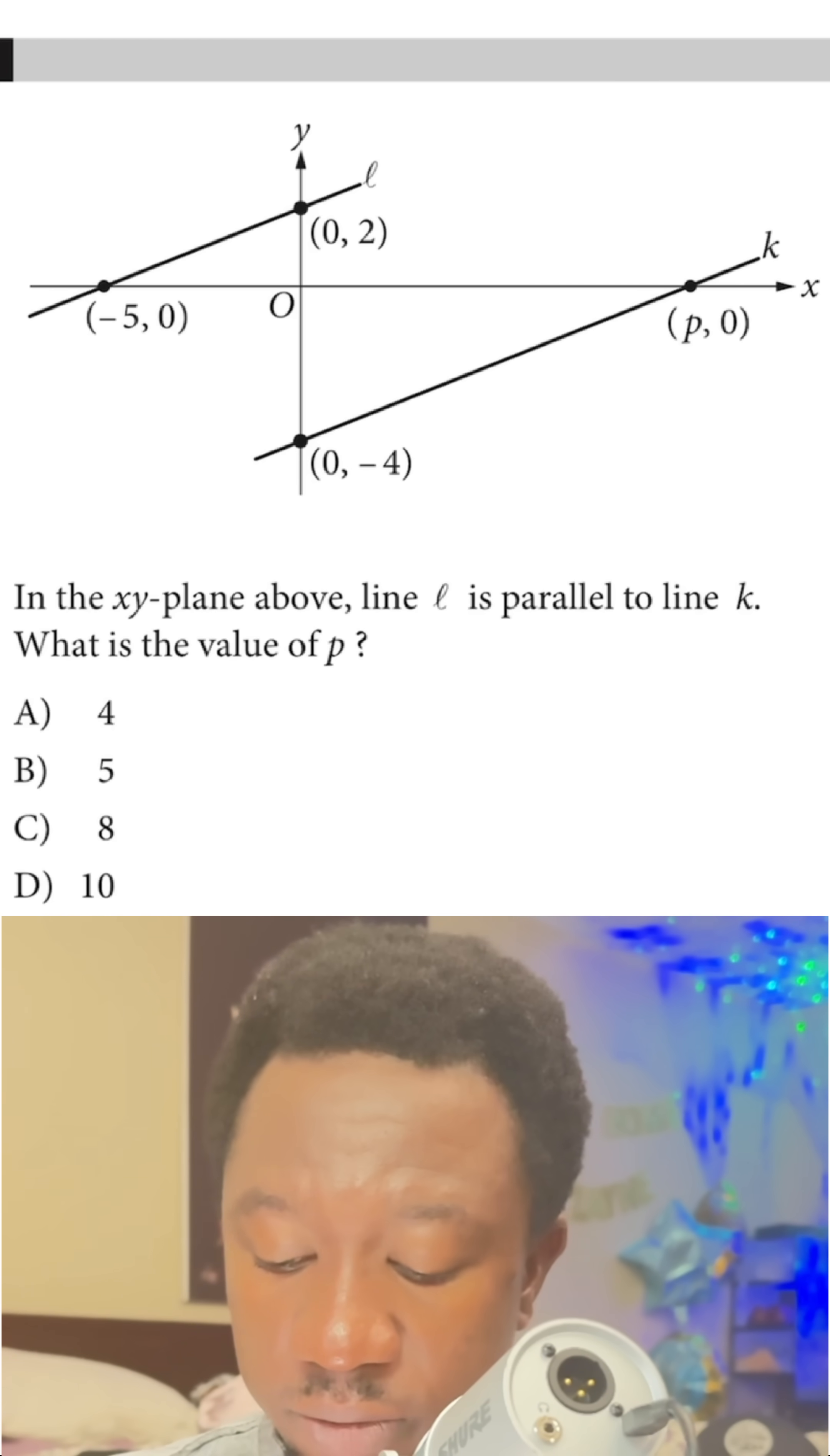In the XY plane above, line L is parallel to line K. What is the value of P? For two lines to be parallel, they have to have the same slopes. So if the two lines have the same slopes,